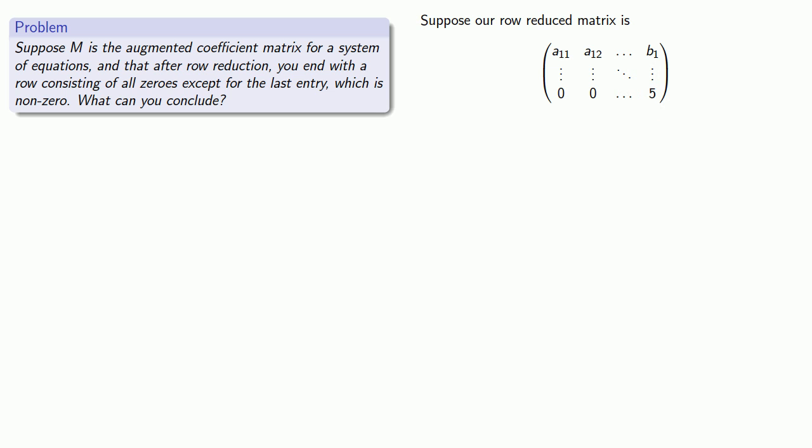Remember, every row of a matrix corresponds to an equation, so this last row of zeros corresponds to the equation 0x₁ + 0x₂ + ... = 5. After all the dust settles, this equation simplifies to 0 = 5.